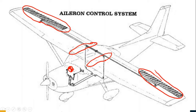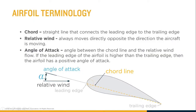So how do the ailerons change the amount of lift each wing creates? They do it by changing the angle of attack so that the angle of attack on each wing is different. The angle of attack is the angle between the chord line of the wing — the straight line from the leading edge to the trailing edge — and the relative wind, which is the wind opposite the flight path.